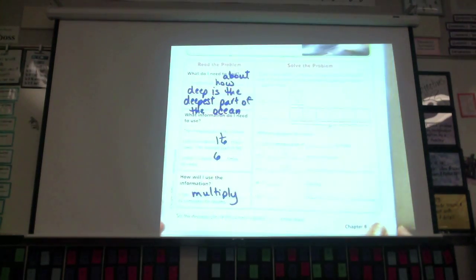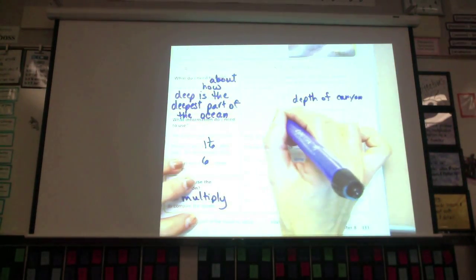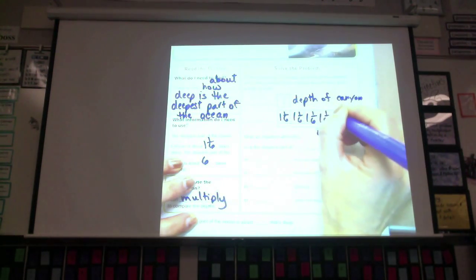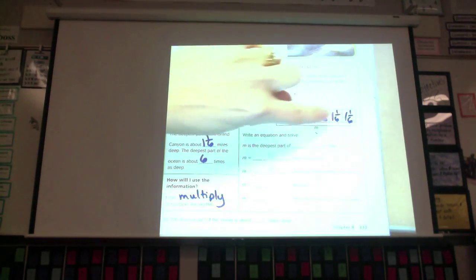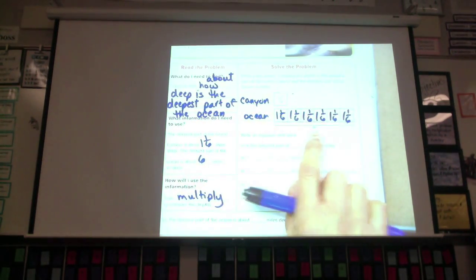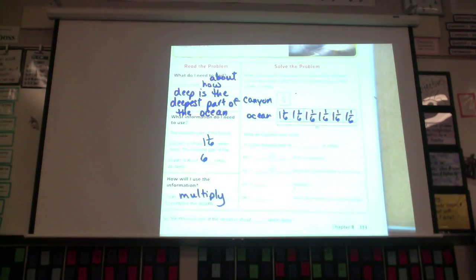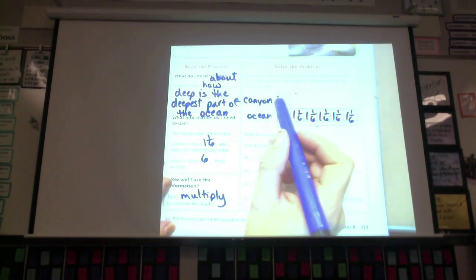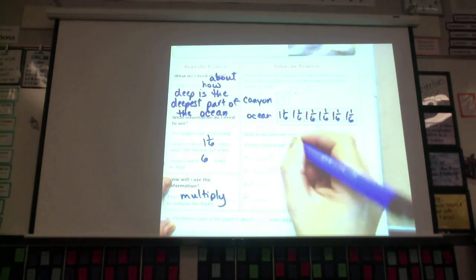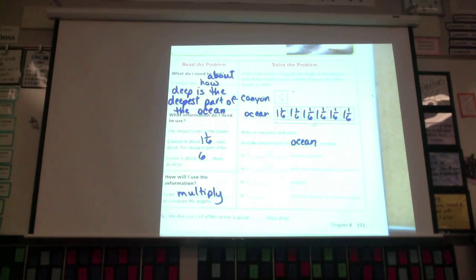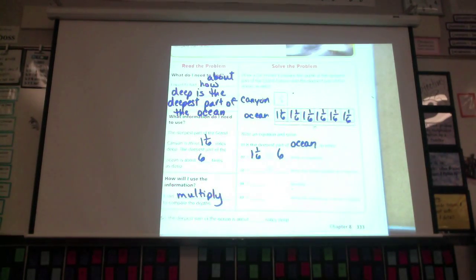One way to solve it is to draw a bar model. The canyon is one and one-sixth. The ocean is going to be six times that. Remember when we did this back when we did the multiplication chapter? Go ahead and put your finger on the M in the model here. What does this number represent? The deepest part of the ocean. Here's the canyon up here. It's going to represent the deepest part of the ocean. So in order to find the deepest part of the ocean, what numbers am I going to work with? One and one-sixth and six. And what math function am I going to use? Bella. I'm going to multiply those.